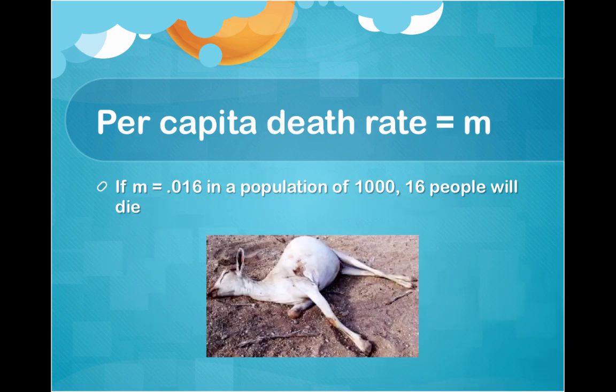Lowercase m is per capita death rate. If m equals 0.016, then in a population of 1,000, 16 people will die.